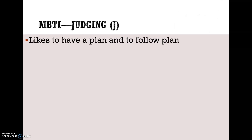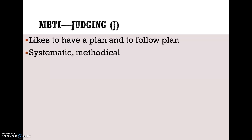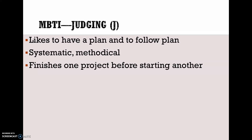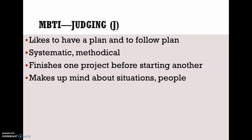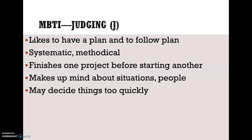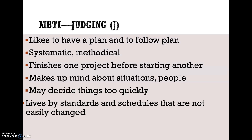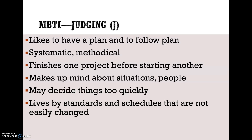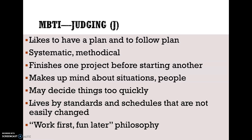The next letter is J — Judging. Judging types like to have a plan and follow the plan. They're systematic and methodical, finish one project before starting another, and make up their minds about situations. They may decide on things too quickly. They live by standards and schedules that are not easily changed, and their philosophy is work first, fun later.